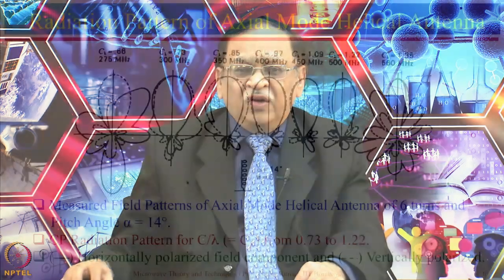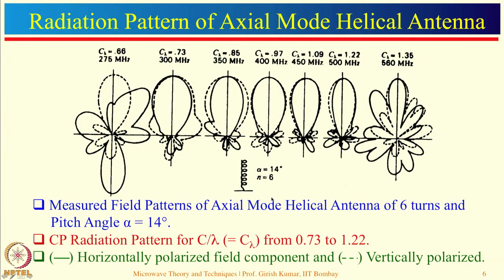As a design example, one helical antenna has been designed around 400 MHz with 6 turns and pitch angle alpha equal to 14 degrees. C_lambda is approximately equal to 1. The solid line shows the horizontally polarized component and the dotted line shows the vertically polarized component — both components are approximately equal from C_lambda of 0.73 up to 1.22, showing very small variation. As C_lambda increases beyond this range, or falls below 0.66, there is a large deviation, so decent circular polarization is obtained within this range.